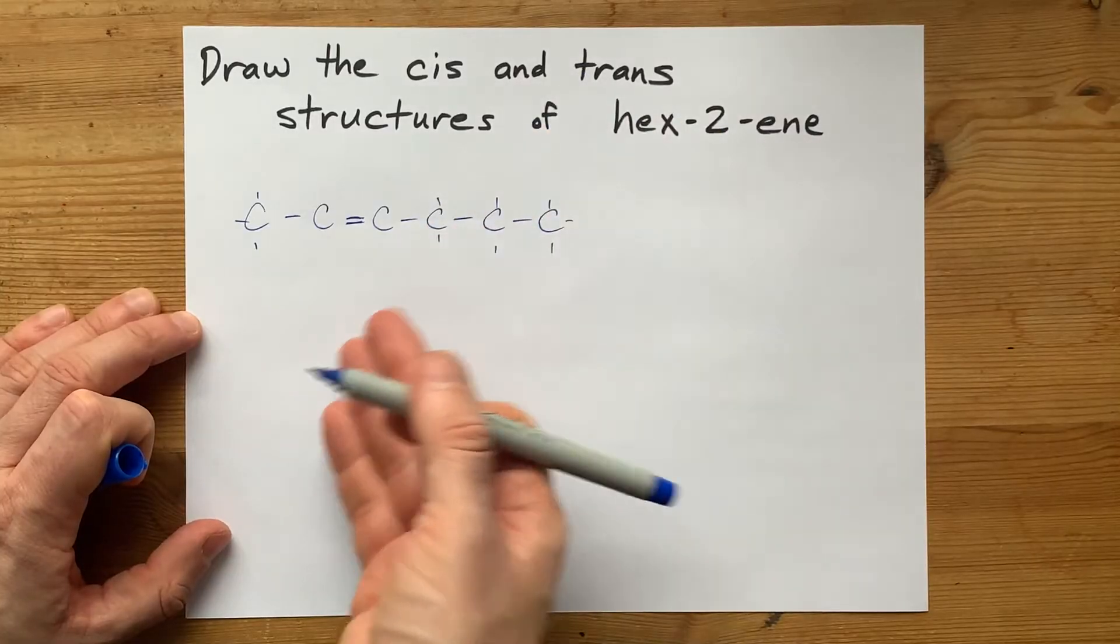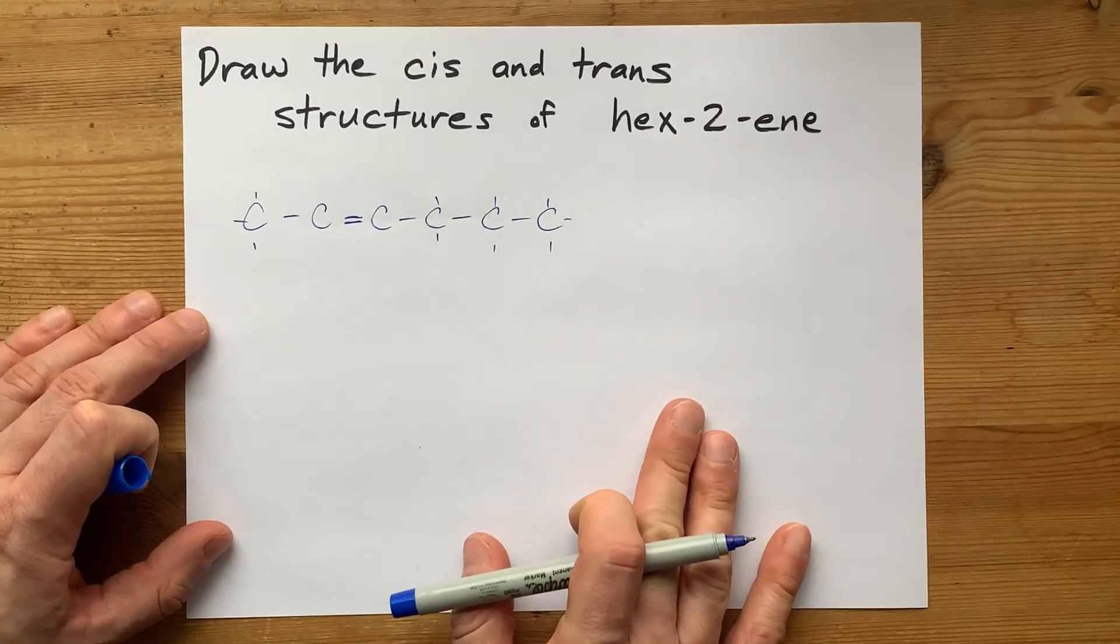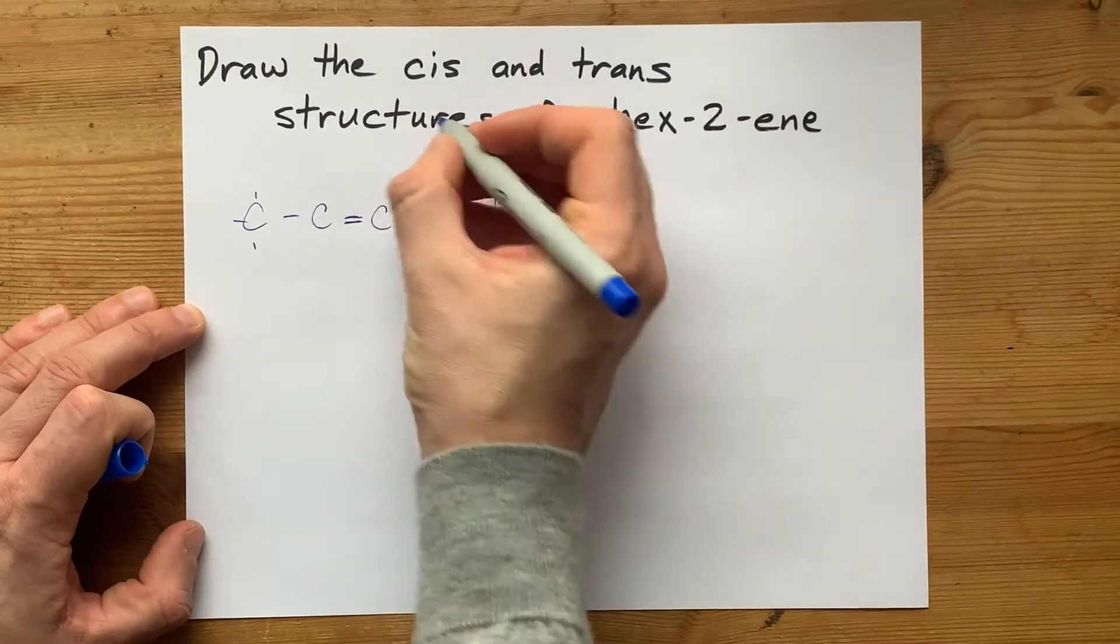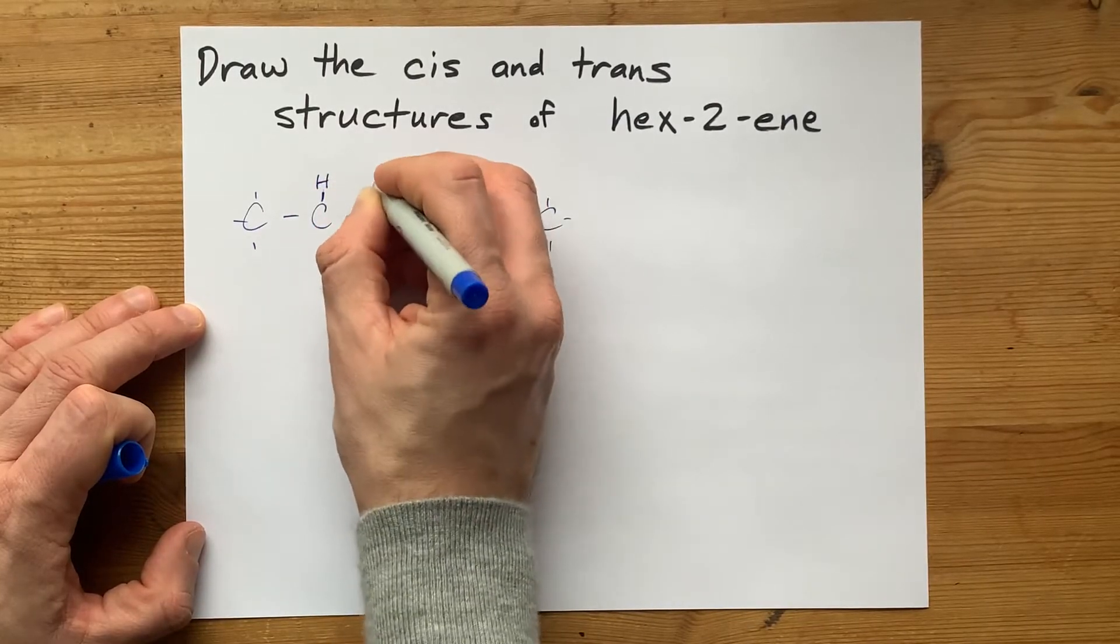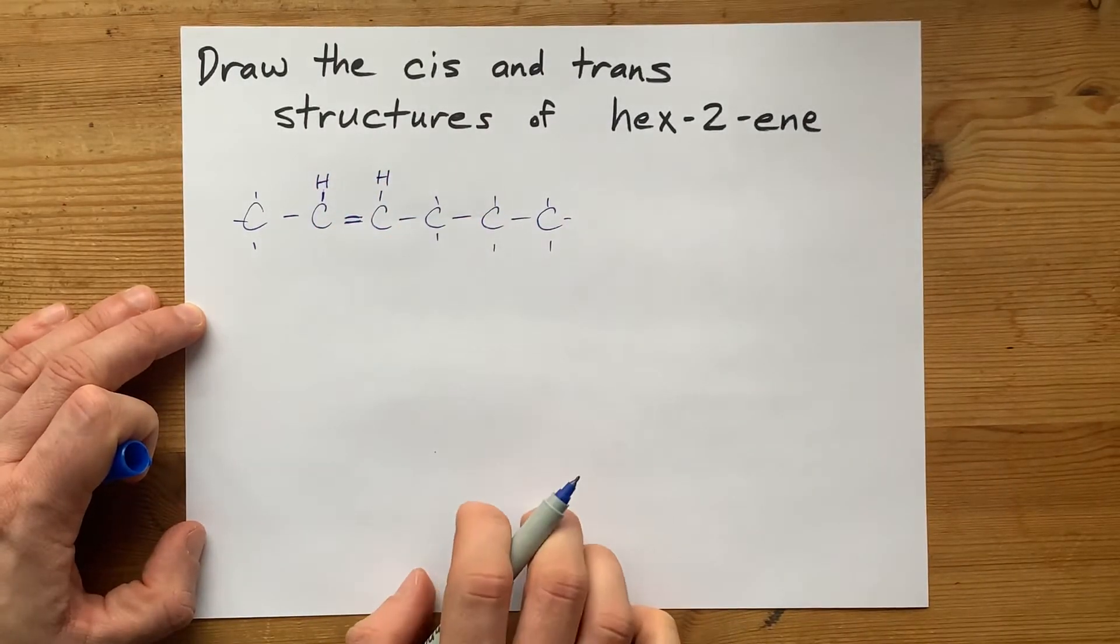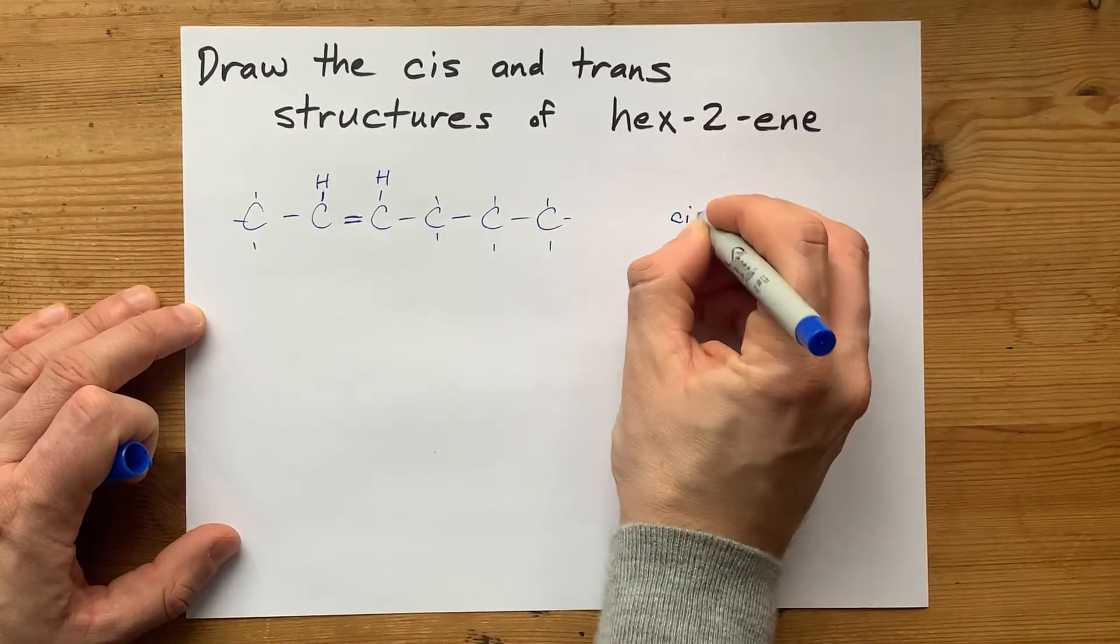And in fact, that's why there are two different isomers here. The one that has hydrogens on the same side of the double bond is the cis isomer.